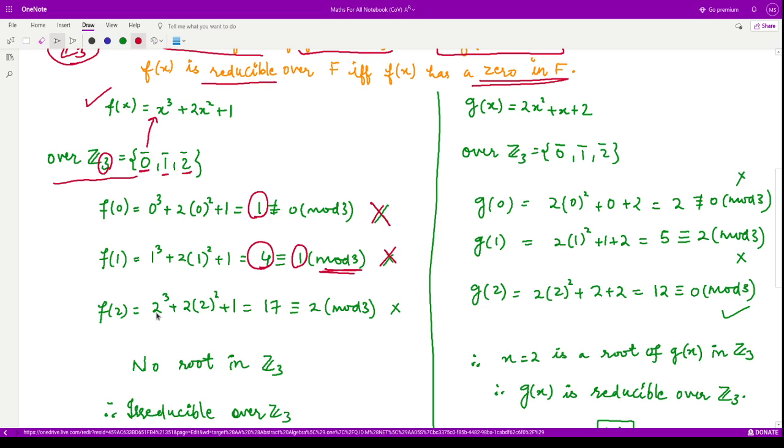Then f(2) would be 2³ + 2(2²) + 1, which is 17. When you divide 17 by 3, you will get the remainder as 2. Therefore, this is also not 0 mod 3. Therefore, these 3 do not form the root for polynomial f(x). Hence, we say that there is no root of this polynomial f(x) in Z₃. Therefore, this polynomial f(x) is irreducible over Z₃.